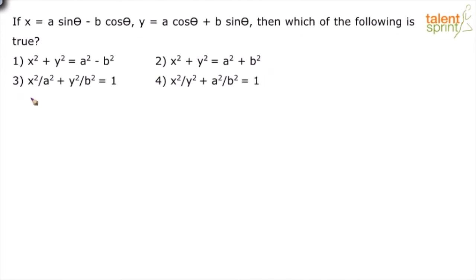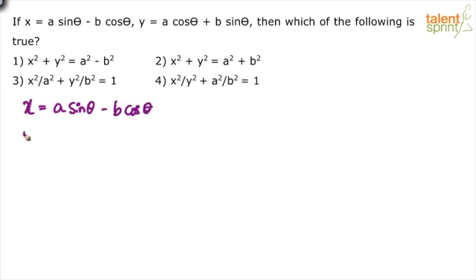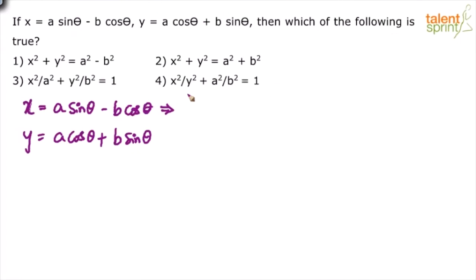How do we solve this? Look at the given equations first: x equals a·sinθ minus b·cosθ, and y equals a·cosθ plus b·sinθ. The conventional method suggests taking the squares of both equations on both sides.